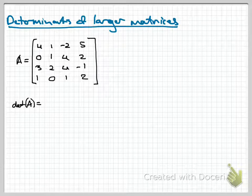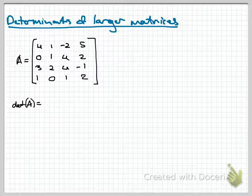Hi, and welcome to this video where we're going to come to grips with how to define the determinant for a matrix that's larger than 3 by 3. It turns out that if we understand how to make a 3 by 3 determinant, we understand how to make any size determinant for any size square matrix whatsoever. Let's dig into an example here and see how this works.